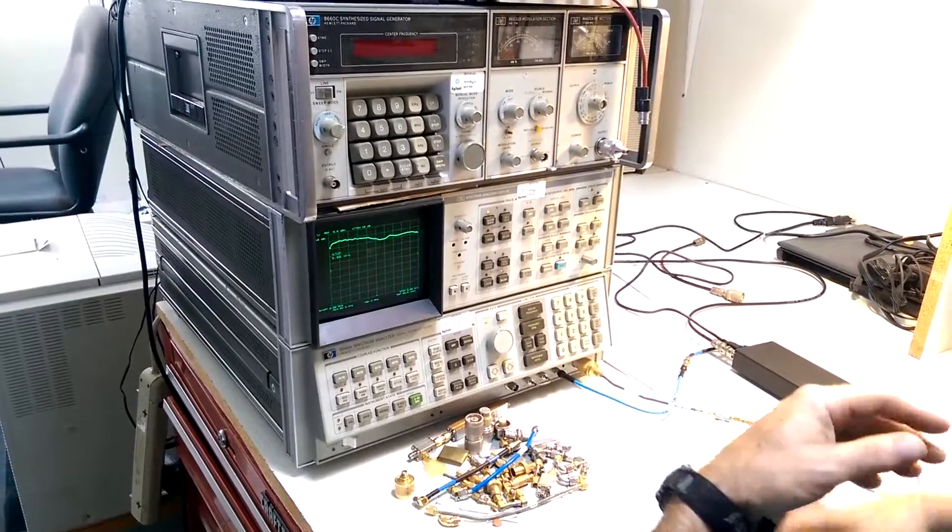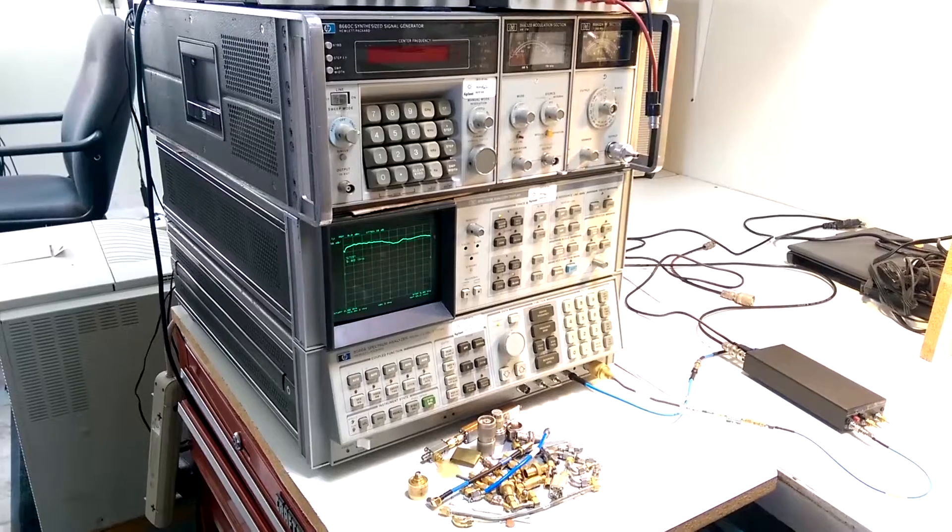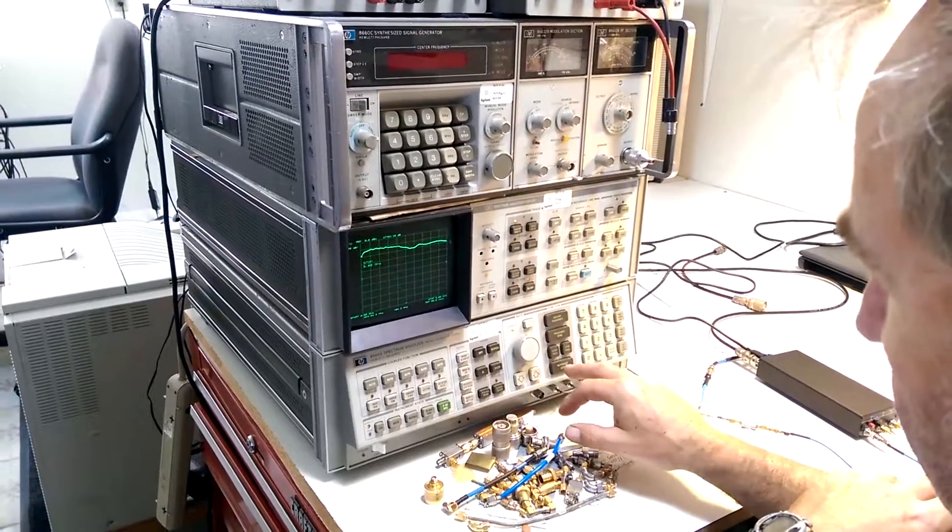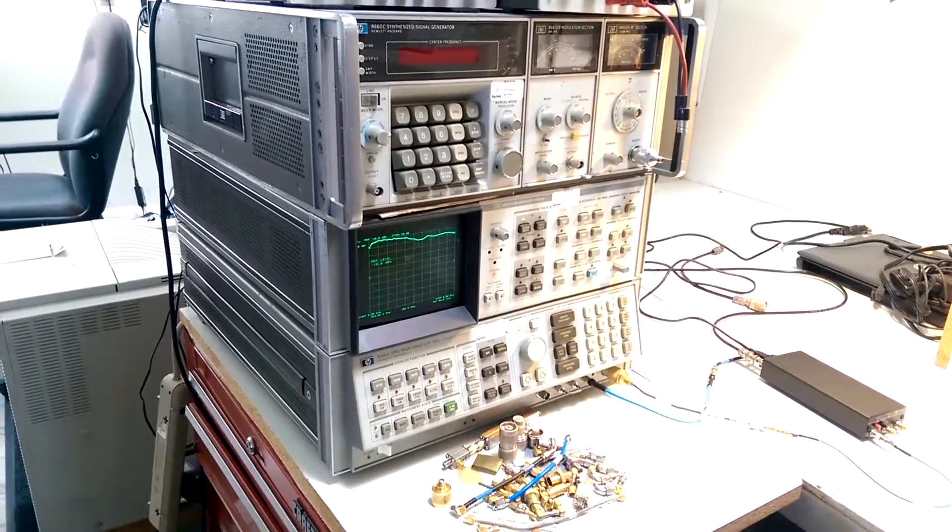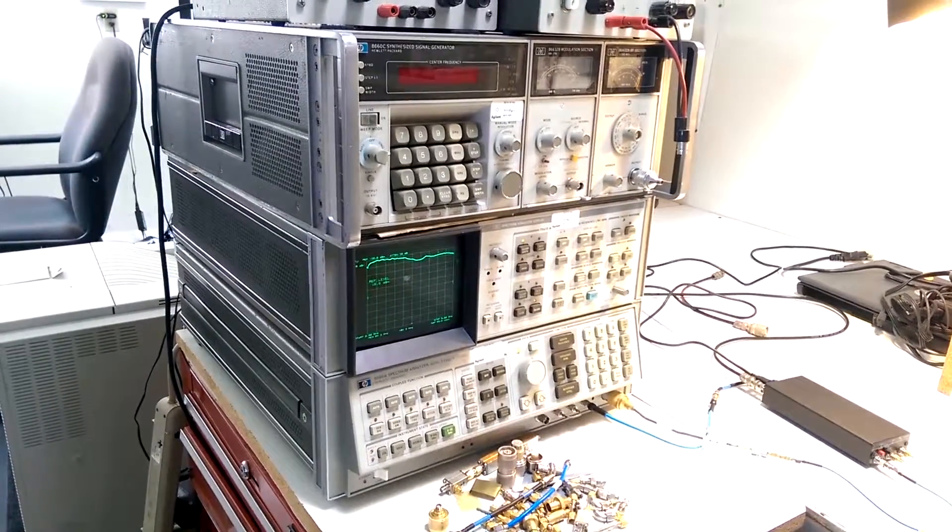Now we want to change the instrument settings so that it's more optimum for using with the tracking generator. First of all we can take the reference level. We can come down a little bit. So instead of a 0 dBm reference level we're at minus 10.